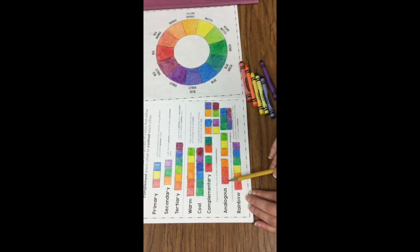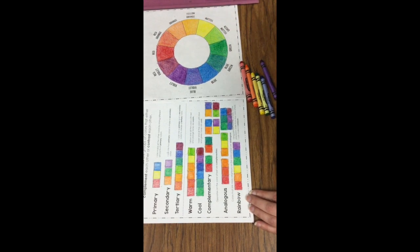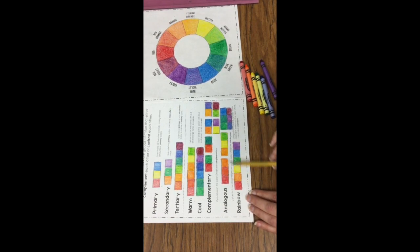These are our analogous colors, which are colors that are neighbors to each other on the color wheel, so we have red, red orange, orange, they're all neighbors,